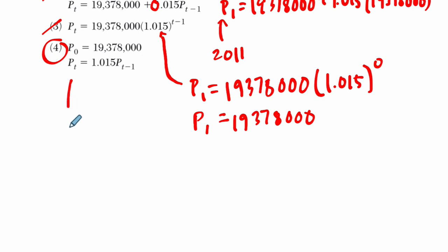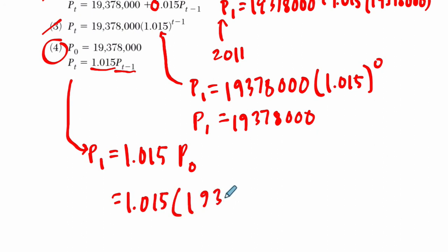If I plug in P sub 1, what does it tell me to do? Take 1.015 and multiply it by P sub T minus 1. So 1 minus 1, because in this case T is 1, and that's P sub 0, which is 1.015 times the previous population.